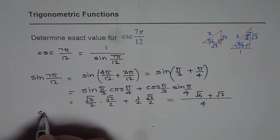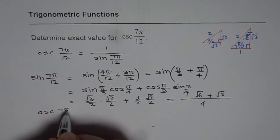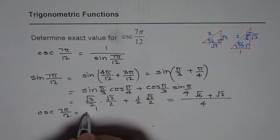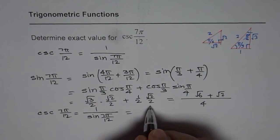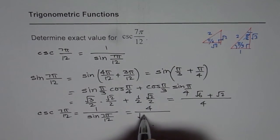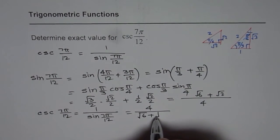And therefore we can write cosecant 7 pi by 12 which is equals to 1 over sine 7 pi by 12 as equals to 4 over square root 6 plus square root 2. So that is our answer for the question.